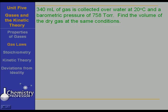Here's a problem. 340 milliliters of gas is collected over water at 20 degrees Celsius and a barometric pressure of 758 torr. We generally have to go over to the wall and read the pressure.